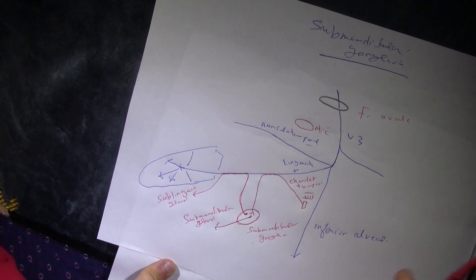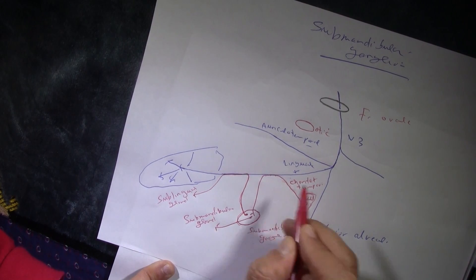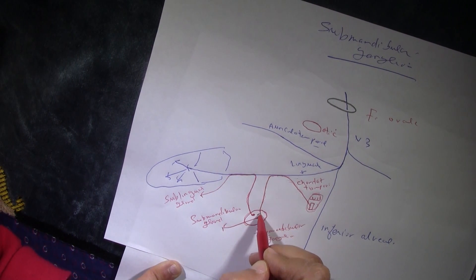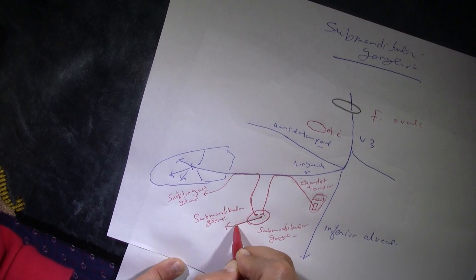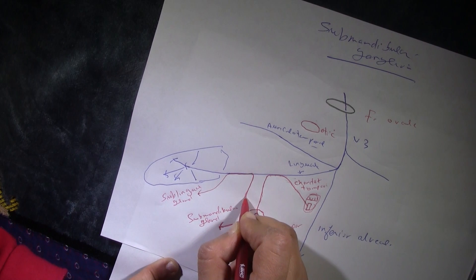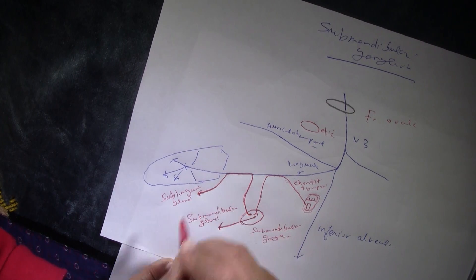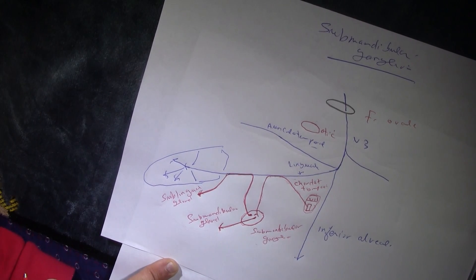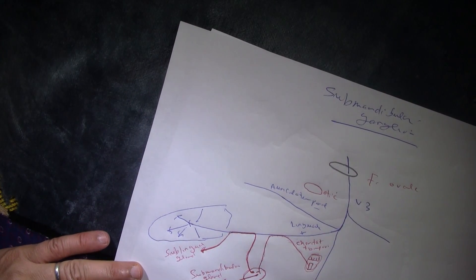To summarize: the facial nerve sends the chorda tympani, which joins the lingual nerve — a branch of V3. The preganglionic fibers stop at the submandibular ganglion. The postganglionic fibers go directly to the submandibular gland, while those going to the sublingual gland rejoin the lingual nerve and travel with it until close to the sublingual gland. So two salivary glands are supplied by the submandibular ganglion.